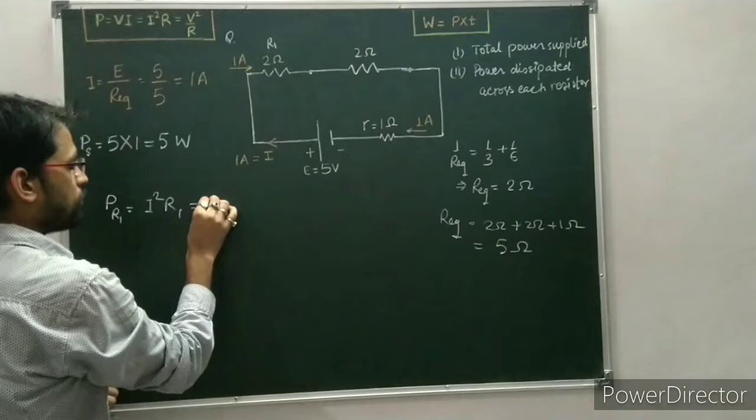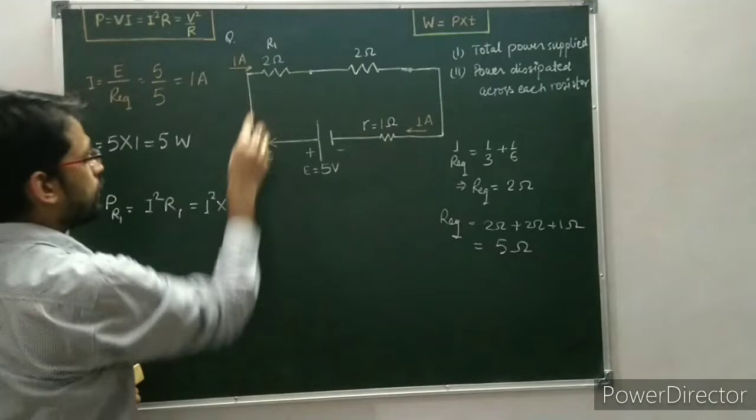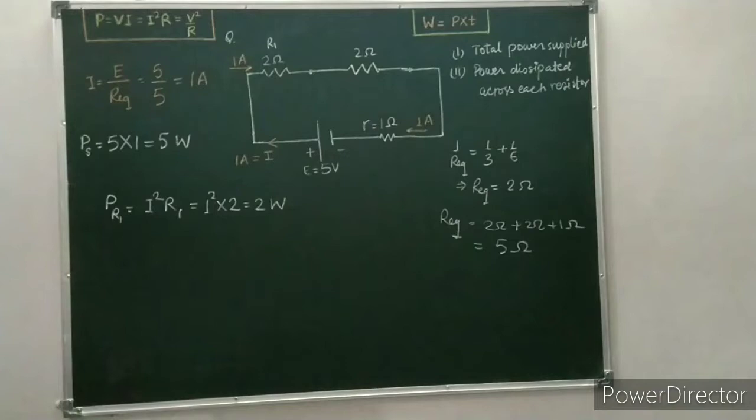The power dissipated across R1 is P = I² × R1 = 1² × 2 = 2 watt.